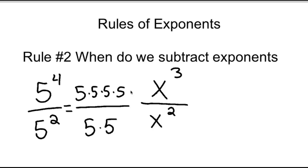What you can do with that is: 5 divided by 5 is 1, and 5 divided by 5 is 1, so you're left with two 5's, or 5 squared.